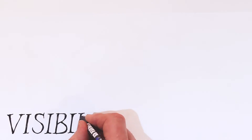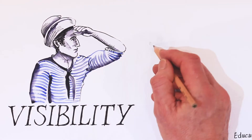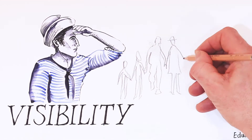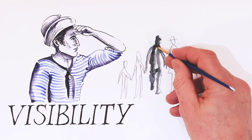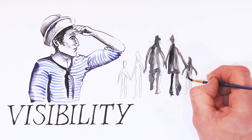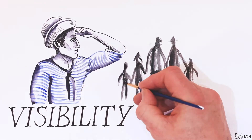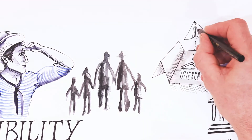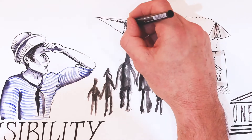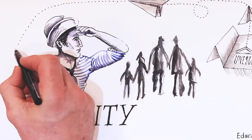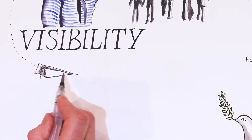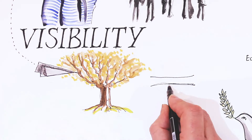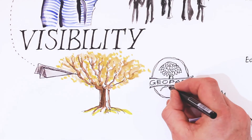Visibility. UNESCO Global Geoparks promote sustainable local economic development mainly through geotourism. In order to stimulate geotourism in the area, it's crucial that a UNESCO Global Geopark has visibility. Visitors as well as local people need to be able to find relevant information on the UNESCO Global Geopark. As such, UNESCO Global Geoparks need to provide information via a dedicated website, leaflets and a detailed map of the area that connects the area's geological and other sites. A UNESCO Global Geopark should also have a corporate identity.